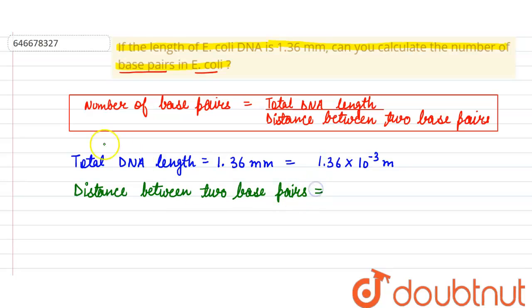it is equivalent to 0.34 into 10 raised to the power minus 9 meter. Now let's put the values in the formula, so the number of base pairs